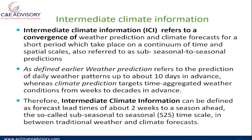Intermediate climate information refers to a convergence of weather prediction and climate forecast for a short period, taking place on a continuum of time and spatial scale, also referred to as sub-seasonal to seasonal predictions. Weather prediction covers daily patterns up to about 10 days in advance, whereas climate prediction targets time-aggregated weather conditions from weeks to decades. Intermediate climate information covers forecast lead times of about two weeks to a season ahead — a season being three to six months.